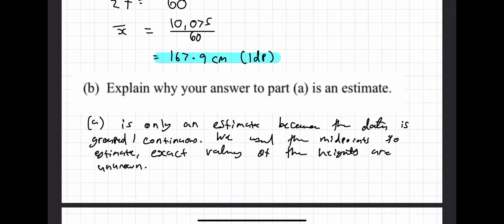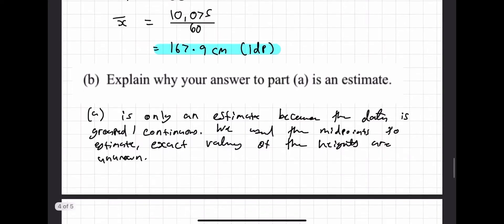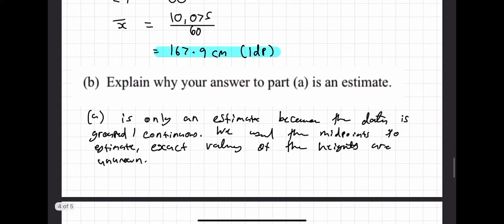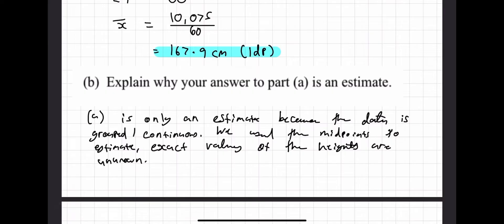All you really need to say is the data is grouped or continuous and the exact values of the heights are unknown. Mentioning that we used the midpoints adds more detail, but it may not be 100% essential according to mark schemes.